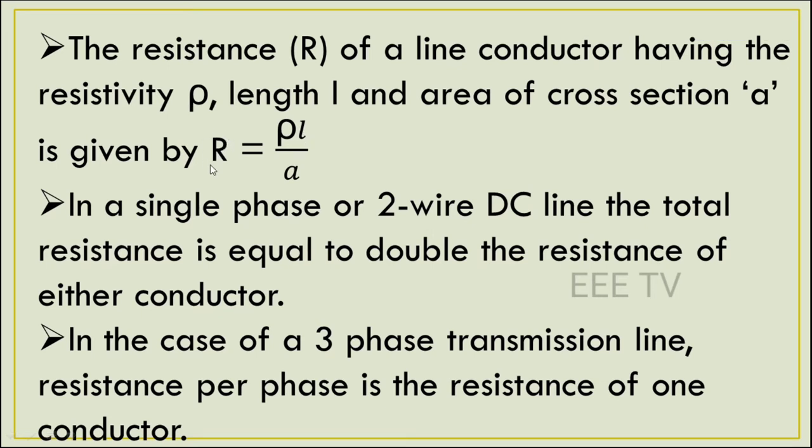In a single phase or two-wire DC line, the total resistance is equal to double the resistance of either conductor. In the case of a three-phase transmission line, resistance per phase is the resistance of one conductor.